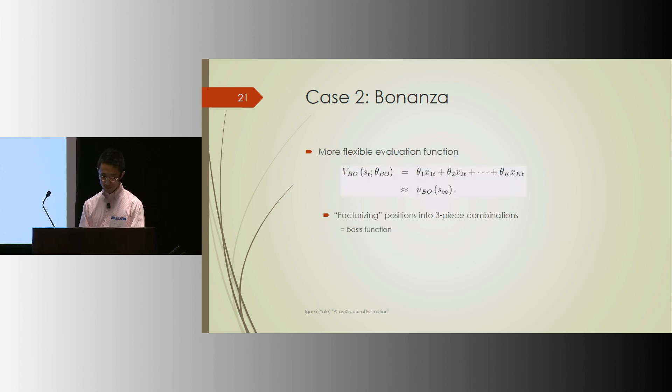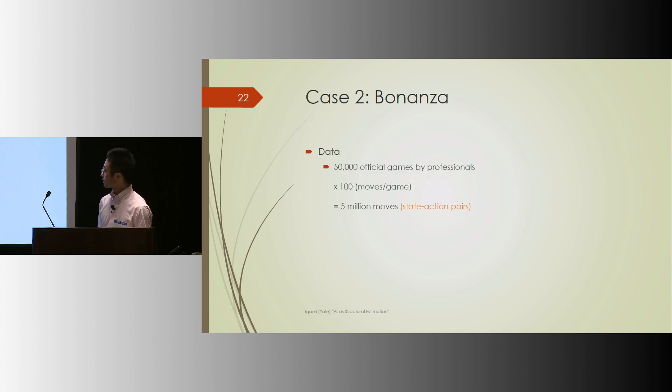So the first element is the evaluation function, like before. He came up with some nice flexible functional form to capture the board space. The data set comes from 50,000 professional games. So it's about 5 million observations of state on the right-hand side and action on the left-hand side.